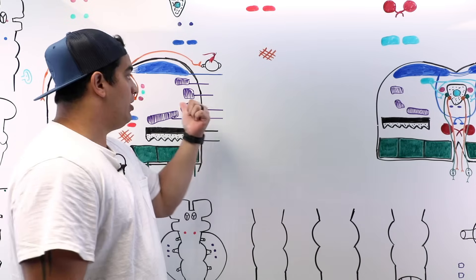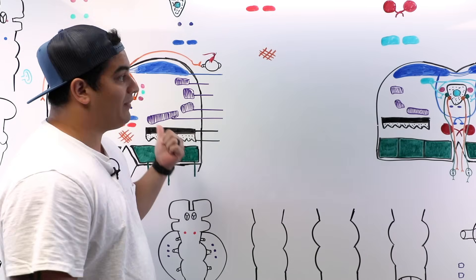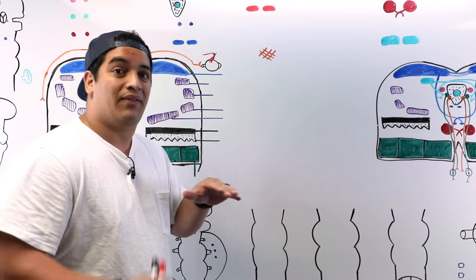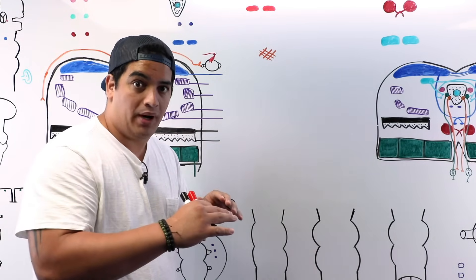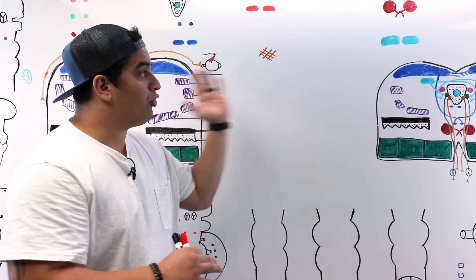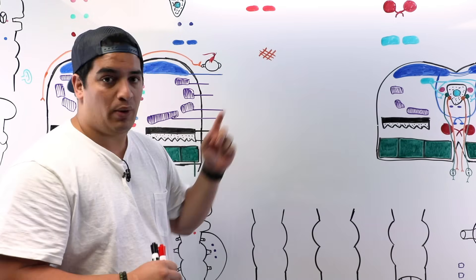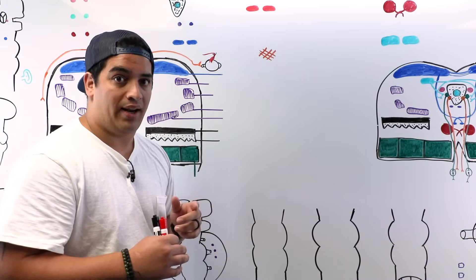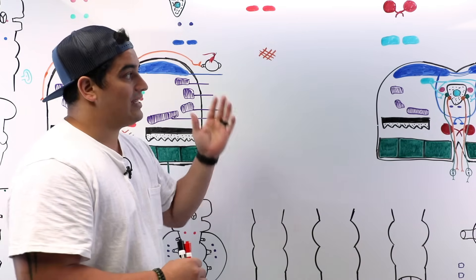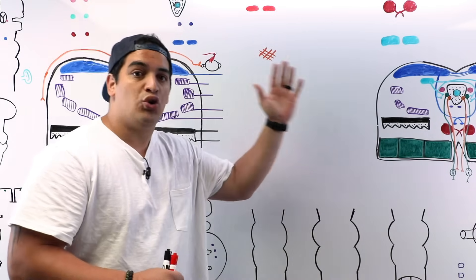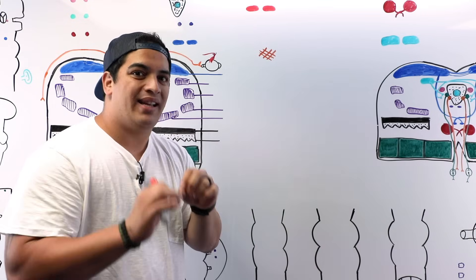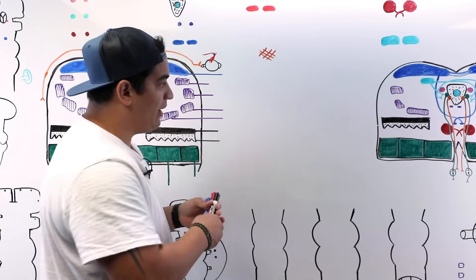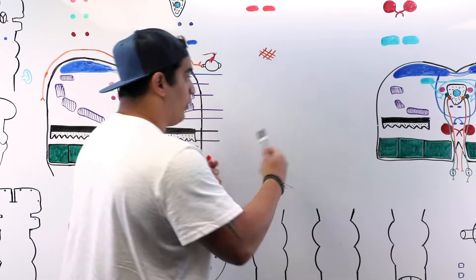The cross section on the left is at the level of the inferior colliculus, and the cross section on the right is at the level of the superior colliculus. Let me explain that so we have an idea of orientation.